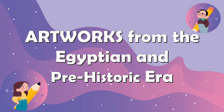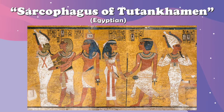Now I will show you some artworks from the prehistoric and Egyptian art period. First is the Sarcophagus of Tutankhamen. This painting on the walls of the tomb shows events of the life of the king while he was still on earth and the scenes he expects to encounter in the underworld after his death.